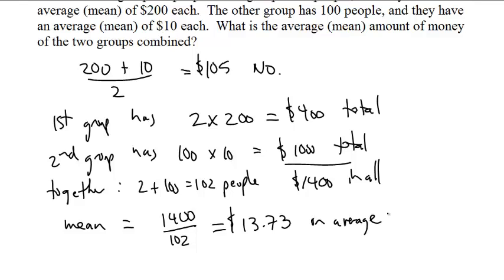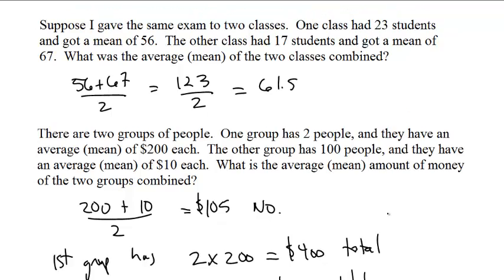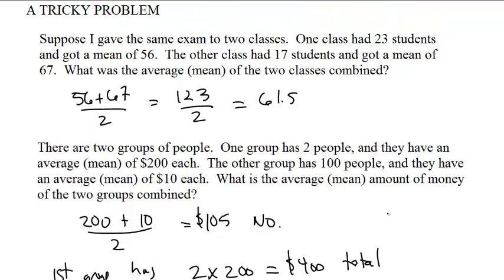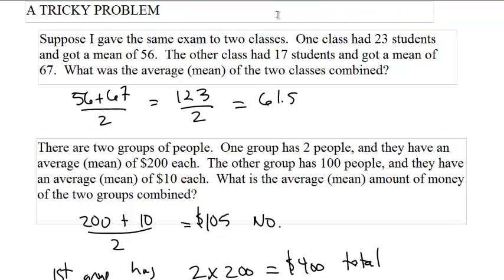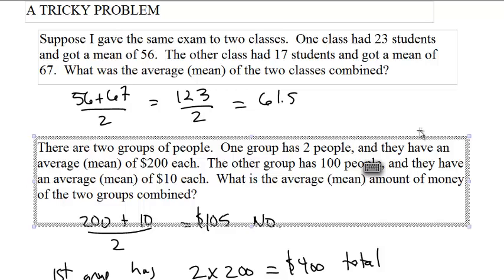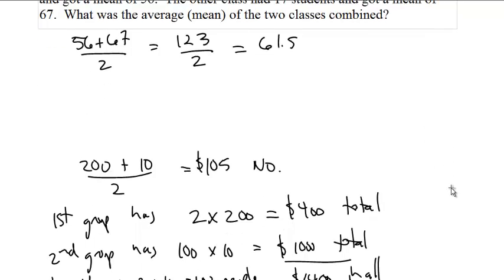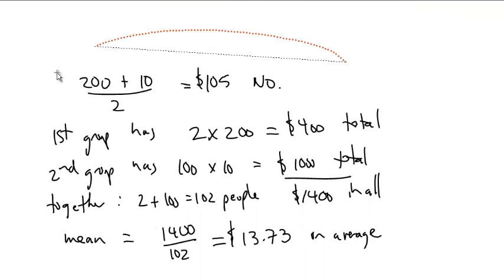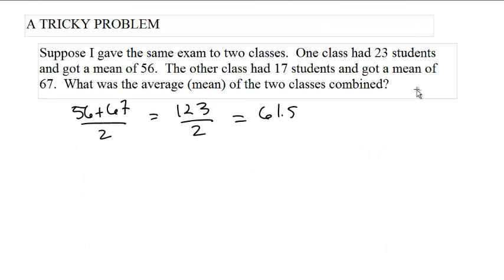You can get a very specific number for the average. This is why the mean is so nice for mathematicians. Now let's go back to the previous problem. It's the same thing, the same sort of reasoning.